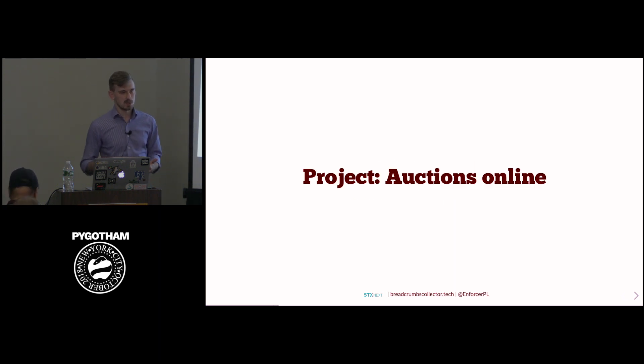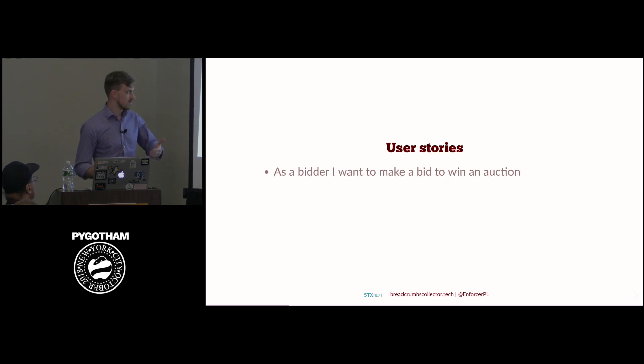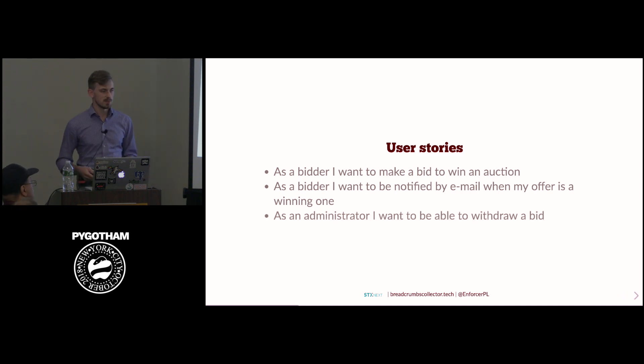So I won't be talking in void, just giving you dry facts. This will be a real example, an auctions online service, a web application. So we can describe requirements of business in terms of user stories. These are short sentences that more or less explain what the user can do with the application. So first, as a bidder, I would like to make a bid so I can win the auction. As a bidder, I want to be notified by email if my offer is the winning one. And as an administrator, I want to be able to withdraw a bid, maybe because I'm asked to, or I detect some malicious behavior.